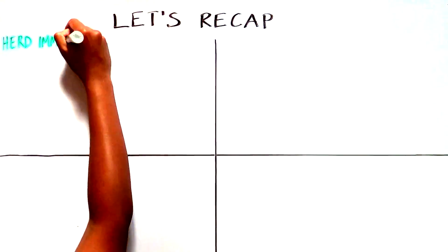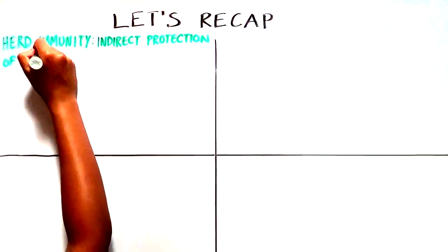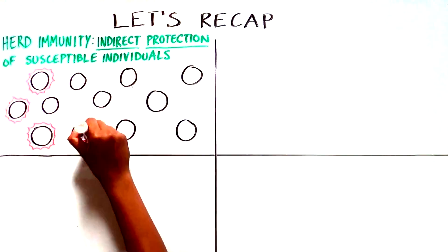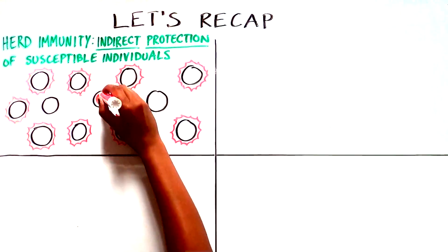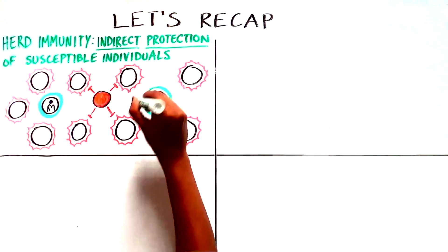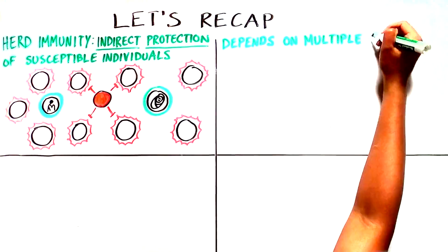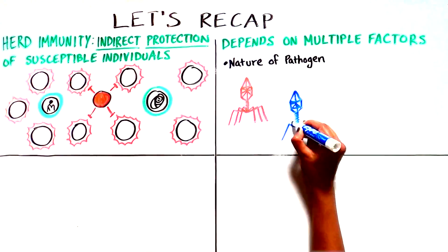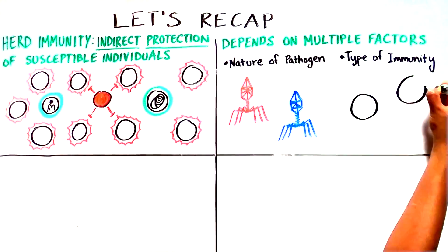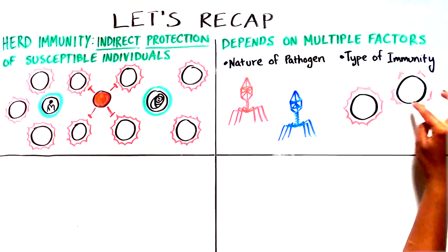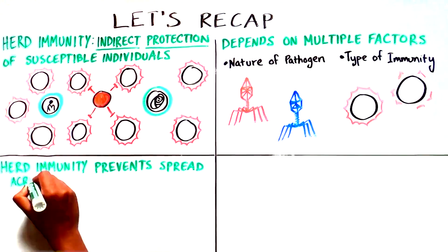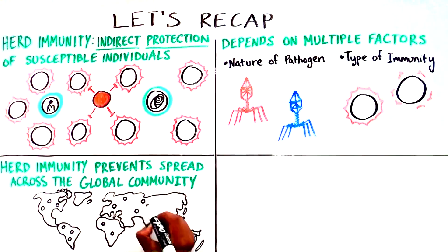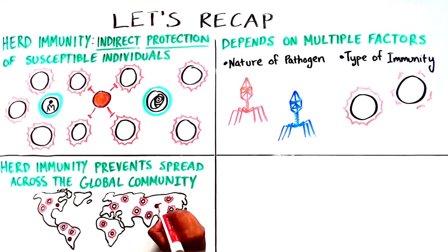Let's recap. Herd immunity is the indirect protection from infection conferred to susceptible individuals when a sufficiently large proportion of immune individuals exist in a population. Achieving herd immunity is a complex and dynamic process, dependent on multiple factors including the nature of the infectious pathogen and the type of immunity it generates. Herd immunity cannot quell a disease outbreak, but it is a critical way to prevent the spread and damage of an infectious agent across the global community.